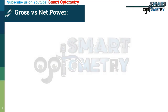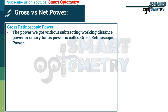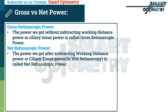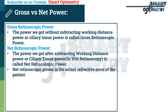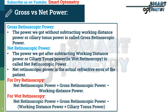Gross versus net retinoscopic power. Gross retinoscopic power is the power obtained without subtracting working distance power or ciliary tonus power. Net retinoscopic power is the power obtained after subtracting working distance power and ciliary tonus power in wet retinoscopy — it represents the actual refractive error of the patient. For dry retinoscopy: net power = gross power minus working distance power. For wet retinoscopy: net power = gross power minus working distance power minus ciliary tonus power.